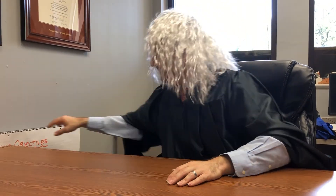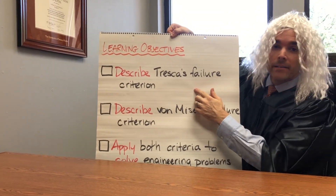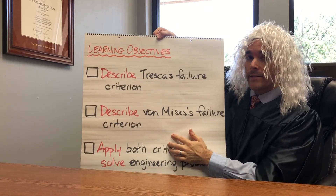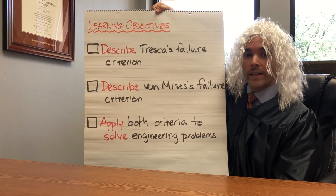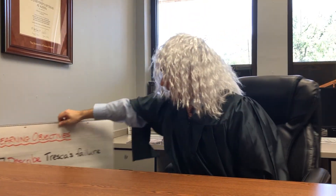For today's trial, I want you to focus on three things: be able to describe Tresca's failure criterion, be able to describe von Mises' failure criterion, and then be able to apply both criteria to solve engineering problems. It is now time to begin. We would ask the first defendant, Mr. Tresca, to please take the floor.